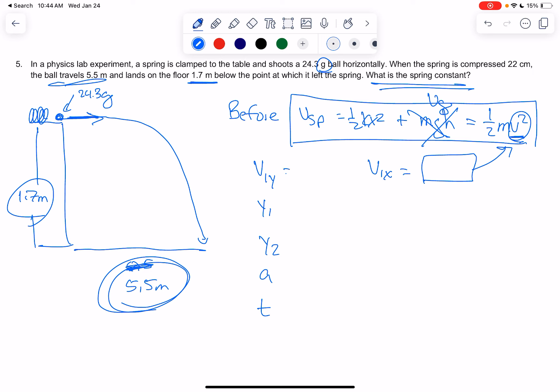So V1Y, it's 0 because it's not moving in the Y directions. Y1 is 1.7 meters. Y2 is 0 meters. It's going to the ground. A is negative 9.8, and you can solve for time.